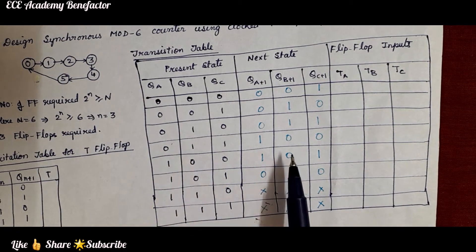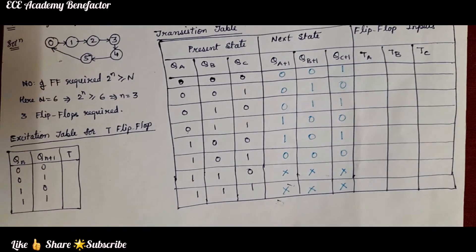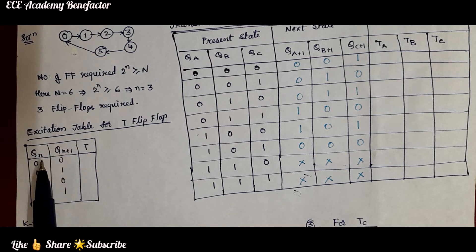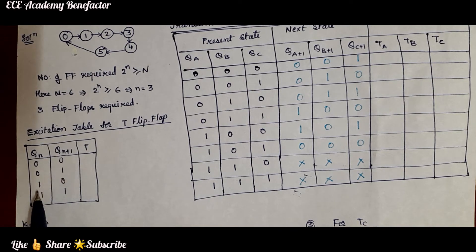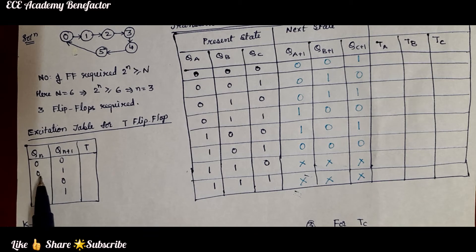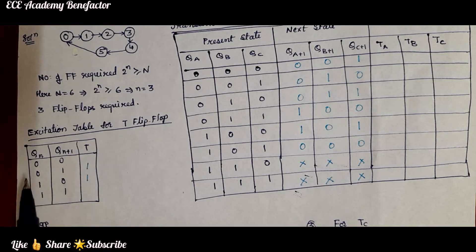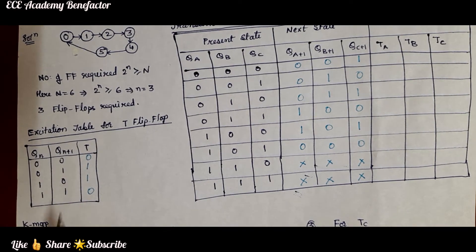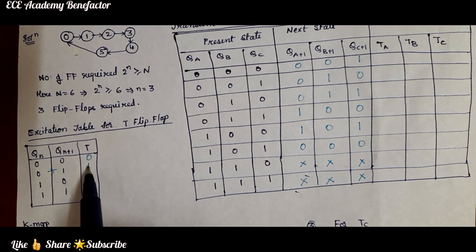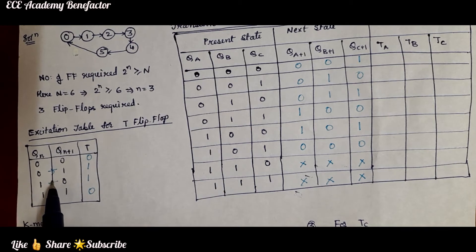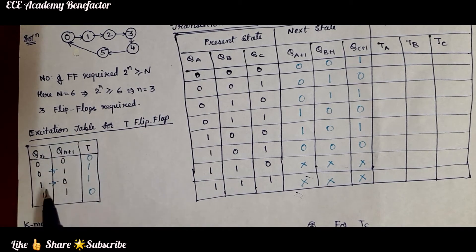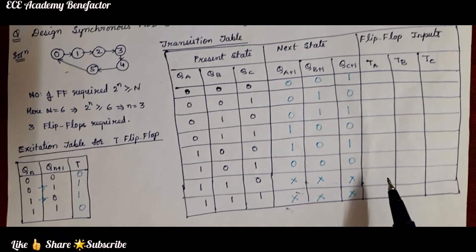We now have the present state and next state. Using the T flip flop excitation table: Qn and Qn+1 combinations are 0→0, 0→1, 1→0, 1→1. T flip flop is a toggle flip flop — whenever there is toggling from 0 to 1 or 1 to 0, the T input is 1. When both states are the same, T is 0.